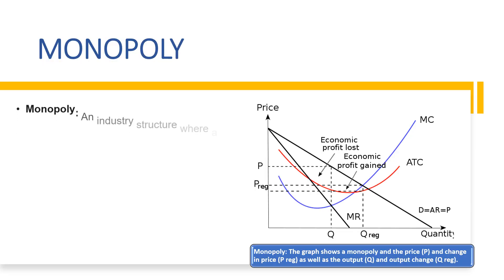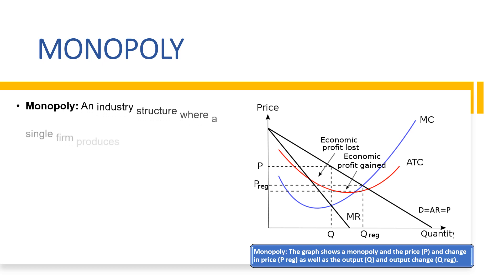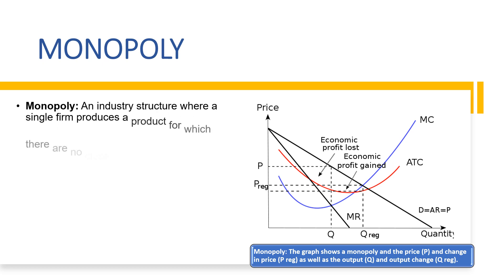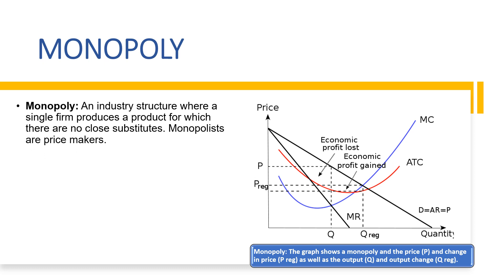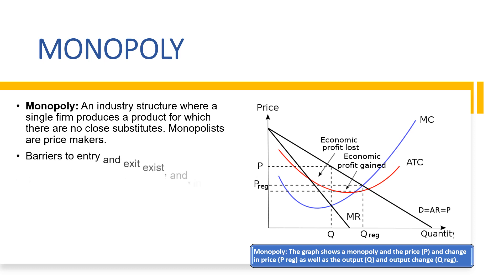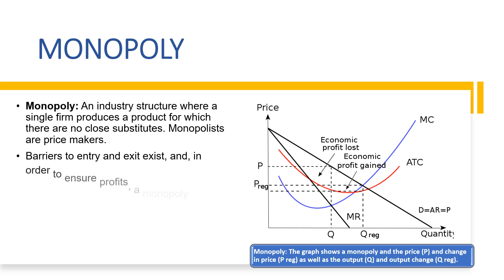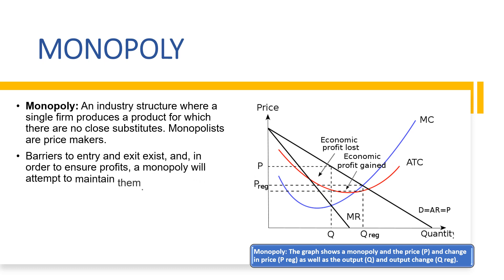Monopoly is an industry structure where a single firm produces a product for which there are no close substitutes. Monopolists are price makers. Barriers to entry and exit exist, and in order to ensure profits, a monopoly will attempt to maintain them.